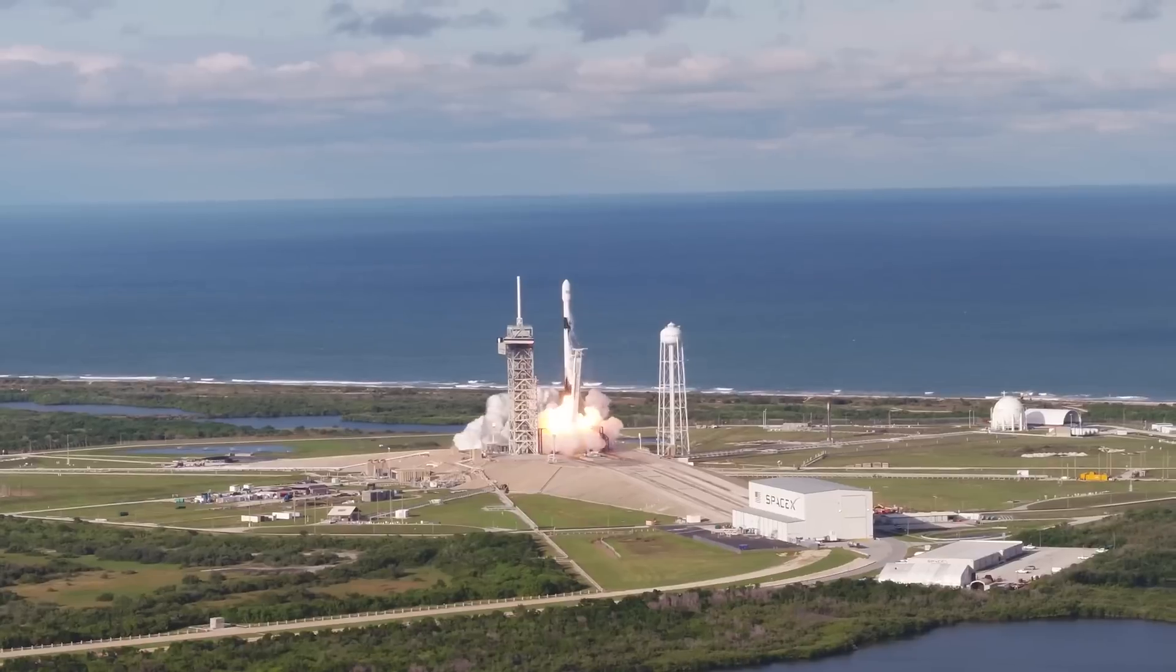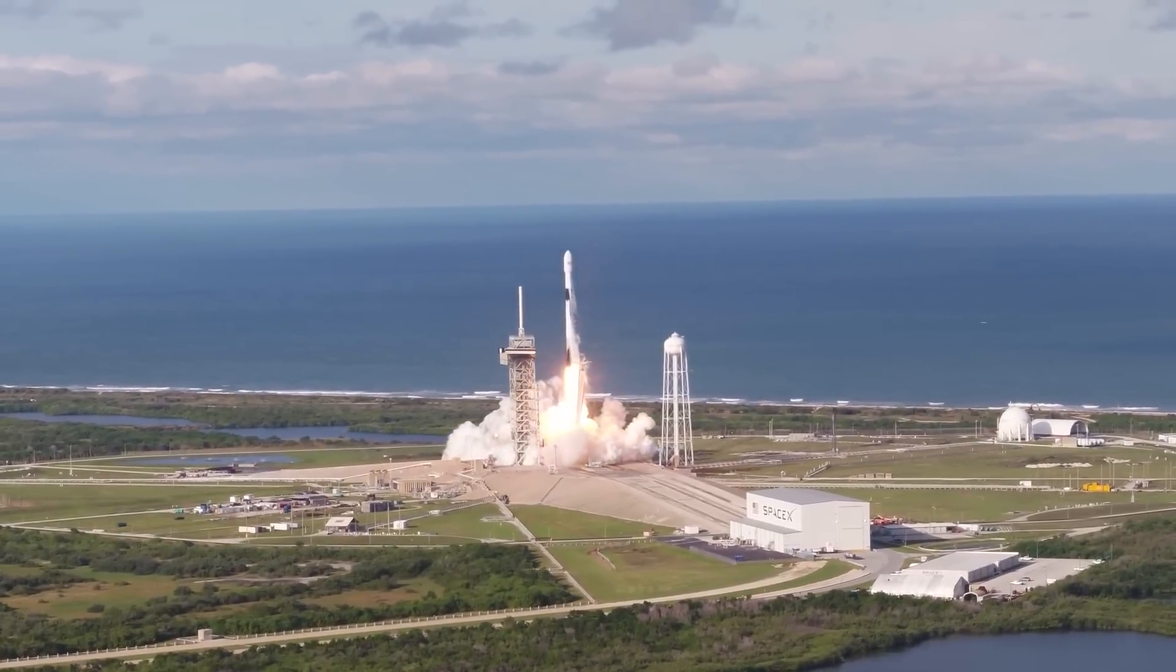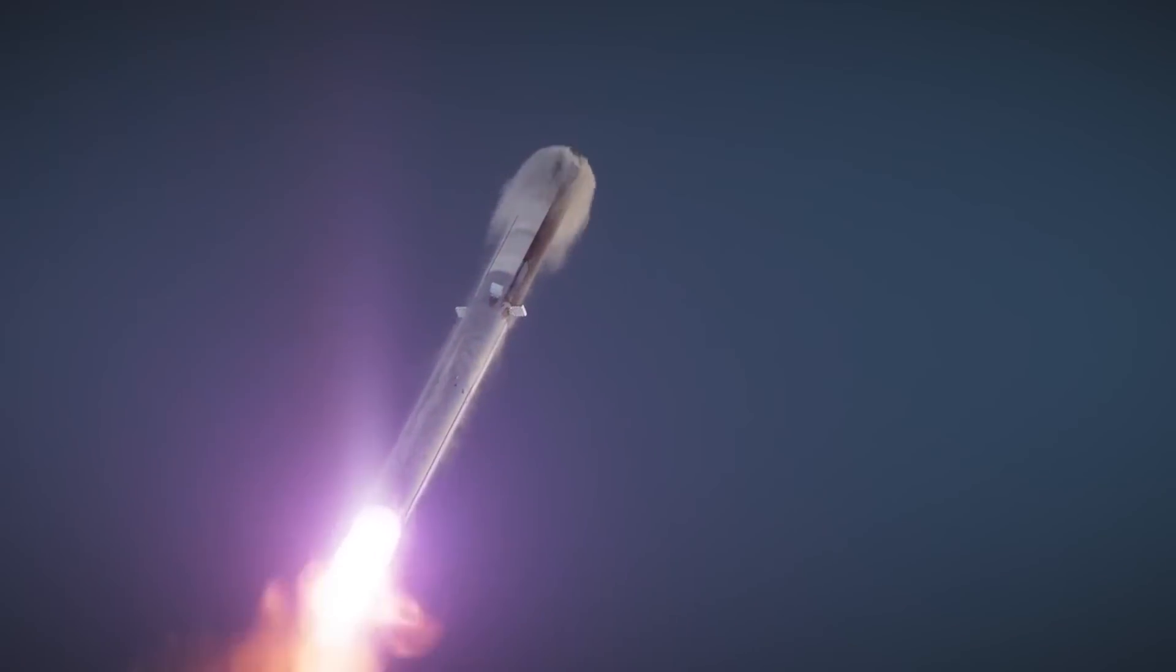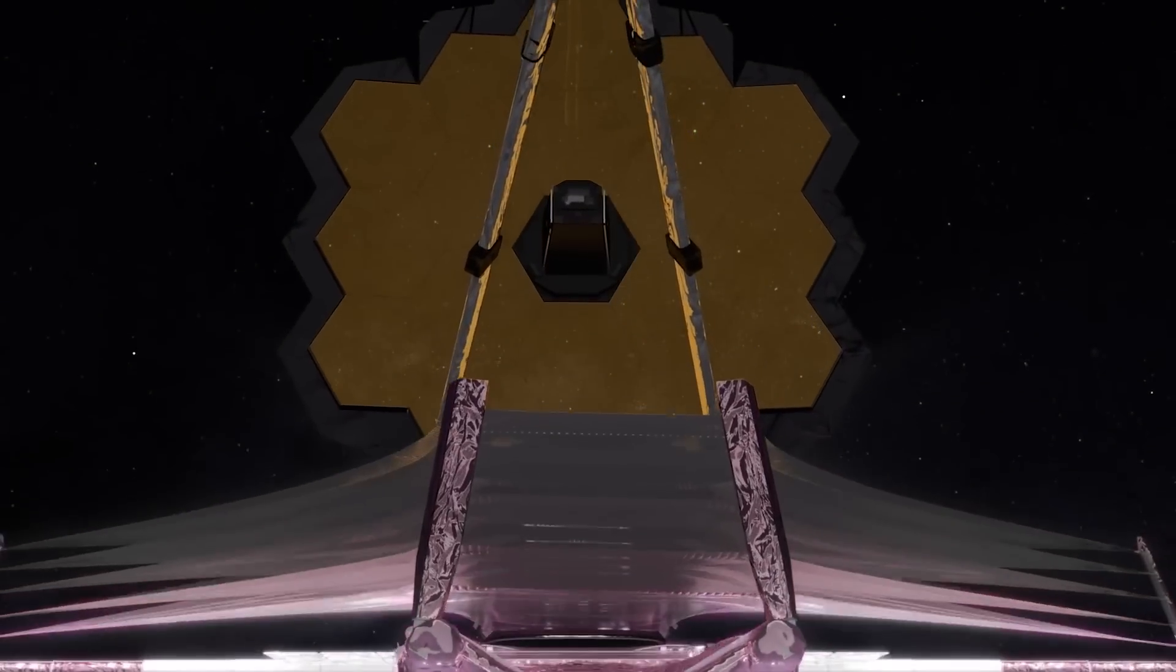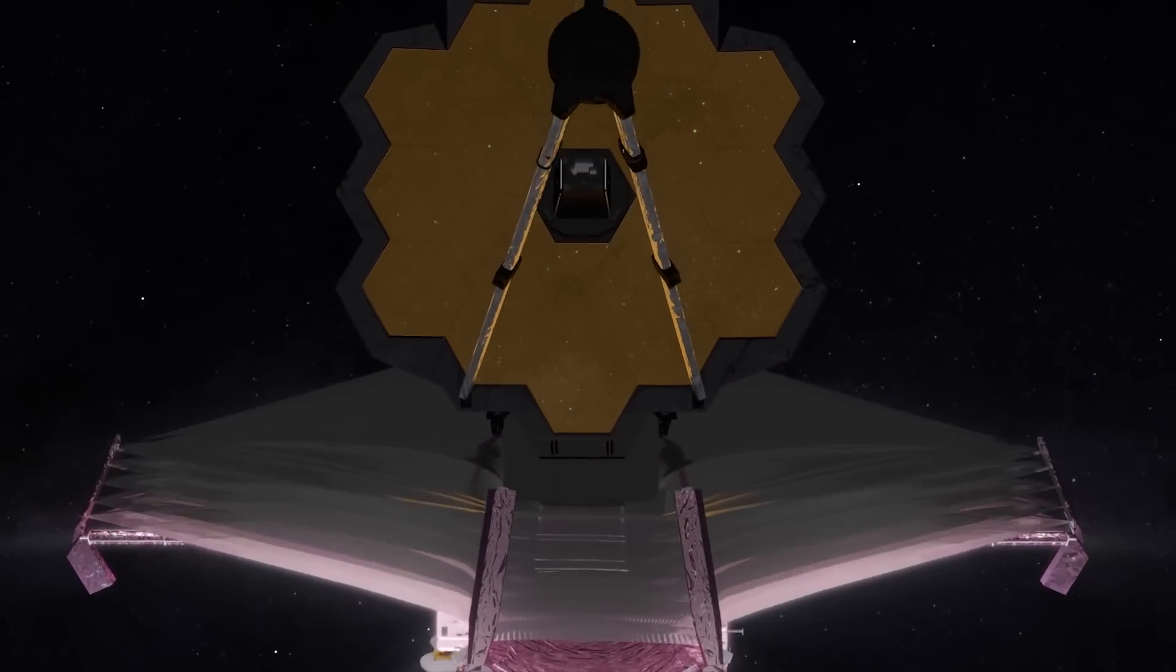The James Webb Space Telescope, which lifted off on December 25, 2021 at 7:20 a.m. Eastern time from the Guiana Space Center in French Guiana, is on a mission to observe some of the weakest, oldest objects in the cosmos.